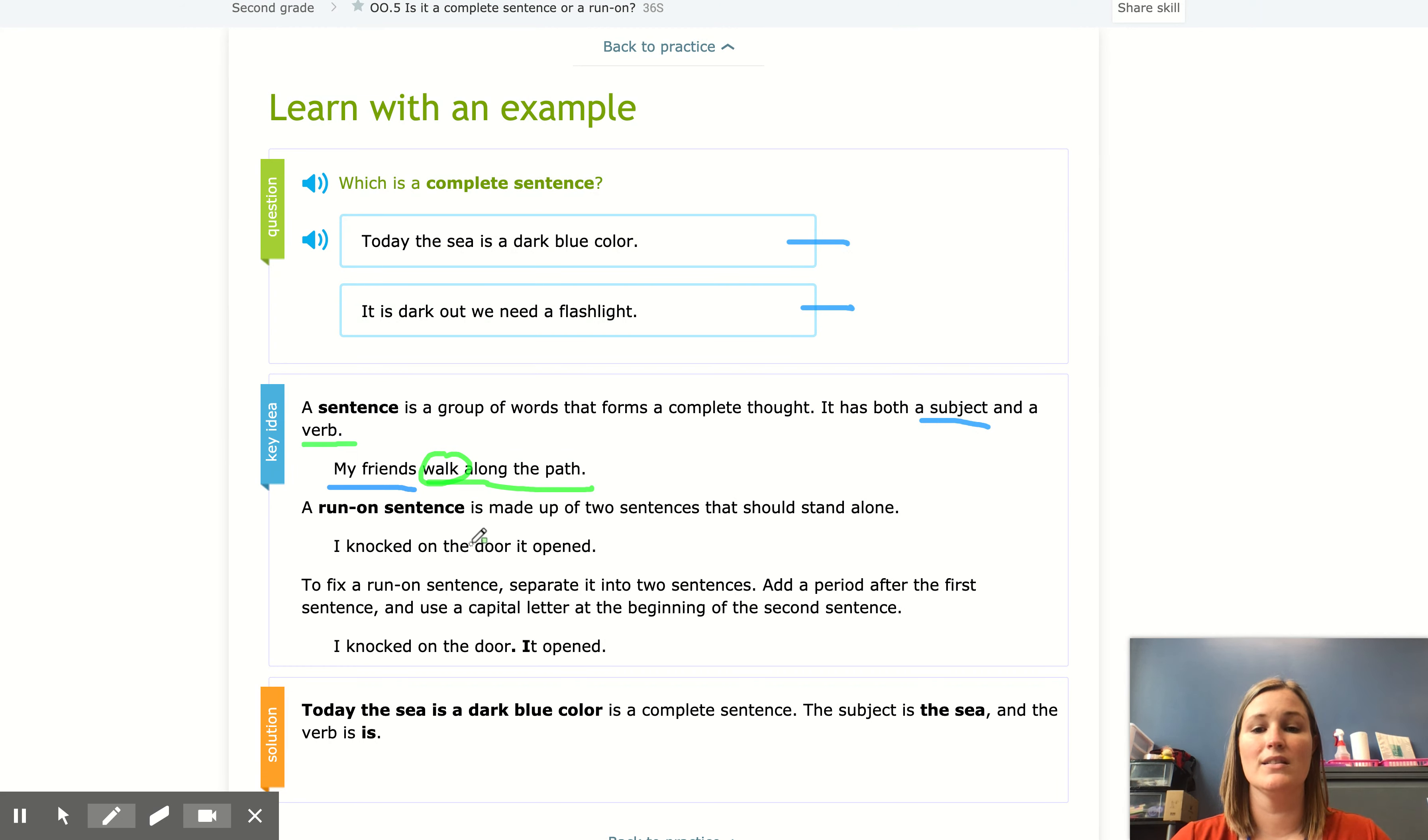A run-on sentence is made up of two sentences that really should stand alone. So it says I knocked on the door it opened. So in here we actually have two subjects. We have I and we have it. We also have two verbs. We have knocked and we have opened. So these are two separate sentences.